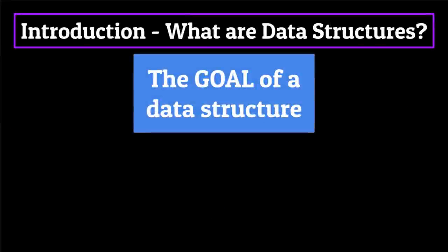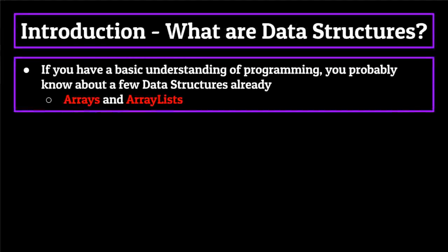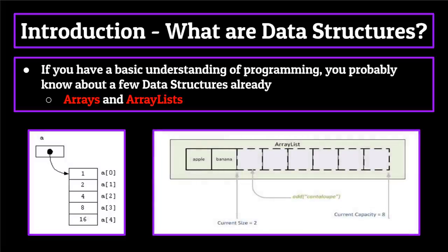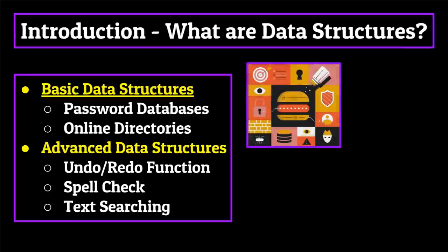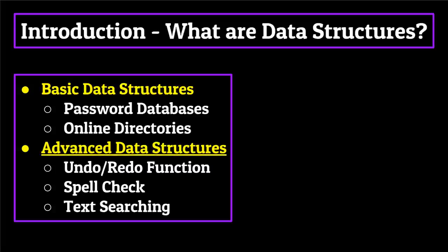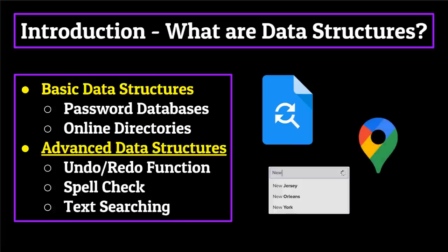Each of the data structures that I'll be talking about are designed for the sole purpose of storing information and allowing the end user to access and manipulate that information in an efficient, effective way. But each one differs in the manner that they accomplish this. If you have a basic understanding of programming, you probably know about a few different data structures already, such as the array and the array list, also known as the list in Python. But if you're going to be pursuing a career in computer science, just knowing these two is definitely not going to cut it. While basic data structures such as the array are used frequently, more advanced data structures are being put to use all around you. The undo/redo button in Google Docs, Google Maps on your phone, even the autocomplete feature in your text messages all require the use of more advanced data structures, which makes them extremely useful to learn.